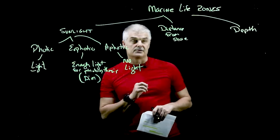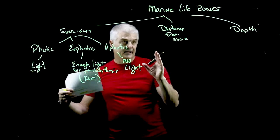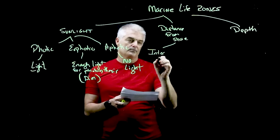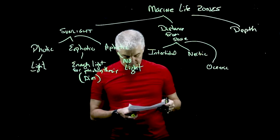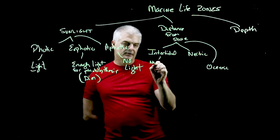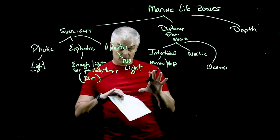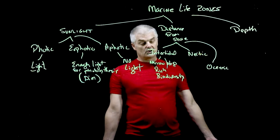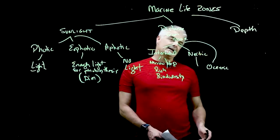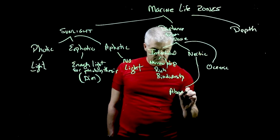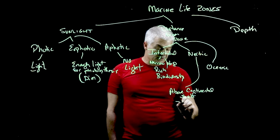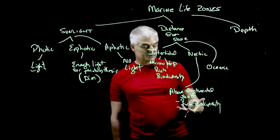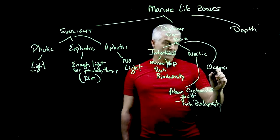Some creatures live in different parts of the ocean. The next category is distance from shore, which also has three zones. Intertidal is a very narrow strip just along the coast where you find rich biodiversity — it's where you go to the beach and see all kinds of animals. The neritic zone is above the continental shelf and also has rich biodiversity because it's shallower water with good nutrient availability. The oceanic zone is the open ocean, and there's not much life out there.